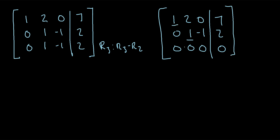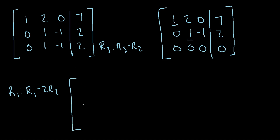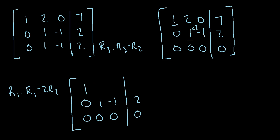Our pivot entries are 1s and all values below them are 0. But we also need zeros above the pivot entries. The 2 in row 1 above the second pivot needs to become 0. We do row 1 minus 2 times row 2: 1 minus 0 stays 1; 2 minus 2 is 0; 0 minus 2 times negative 1 gives 0 plus 2, so 2; and 7 minus 4 is 3. So row 1 becomes: 1, 0, 2, 3.